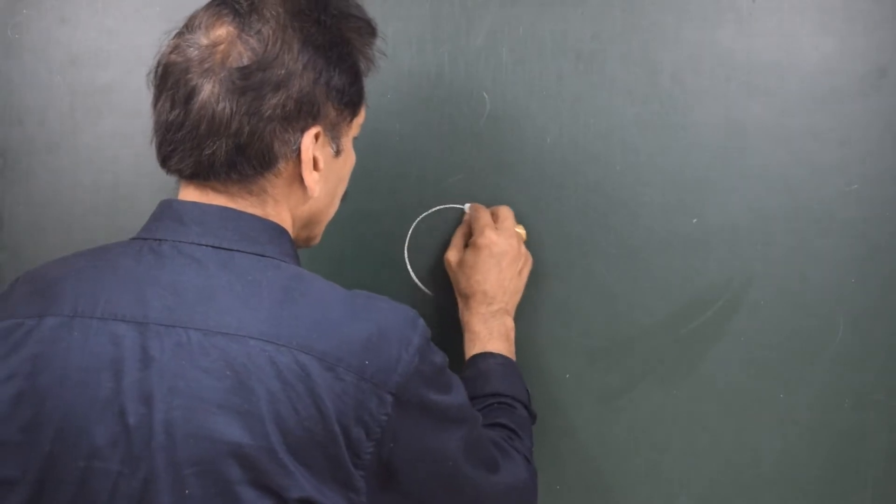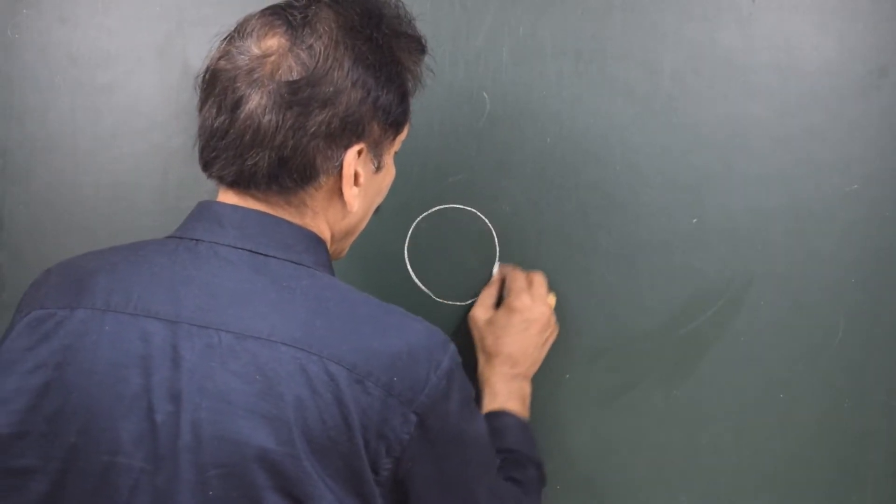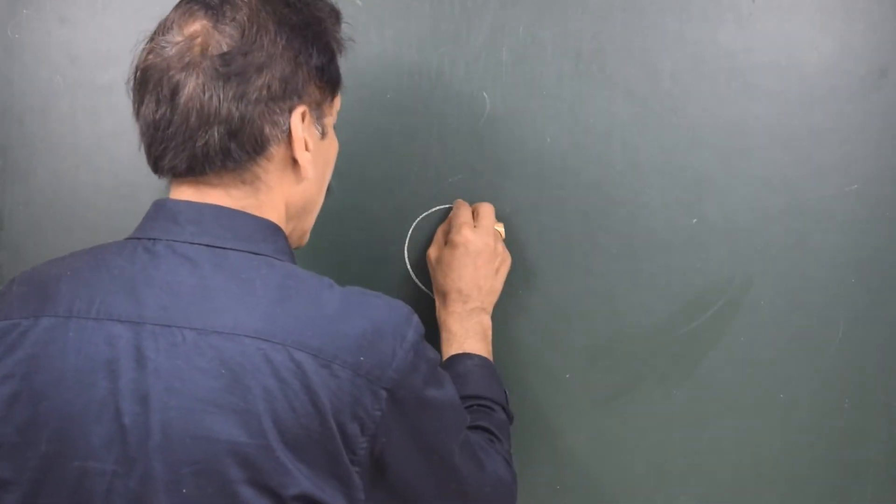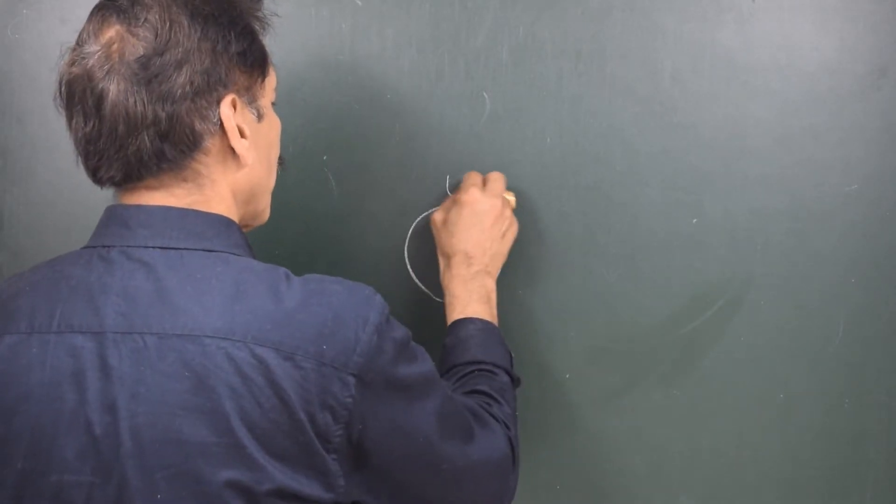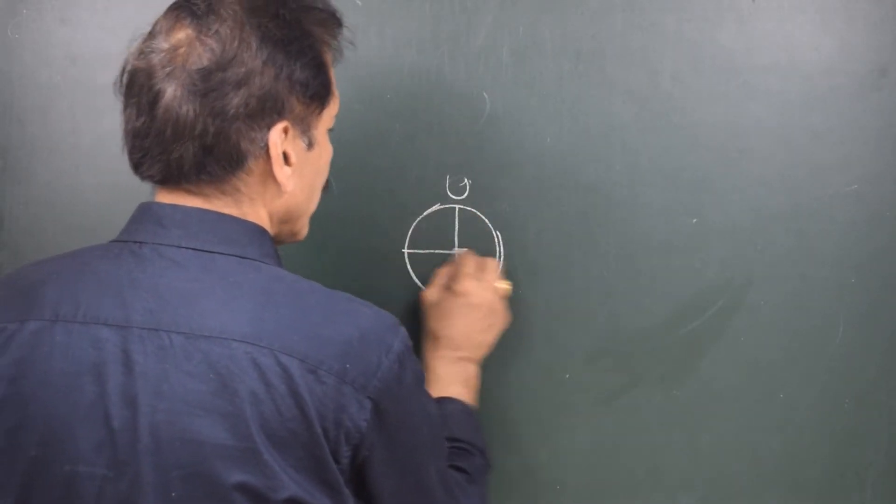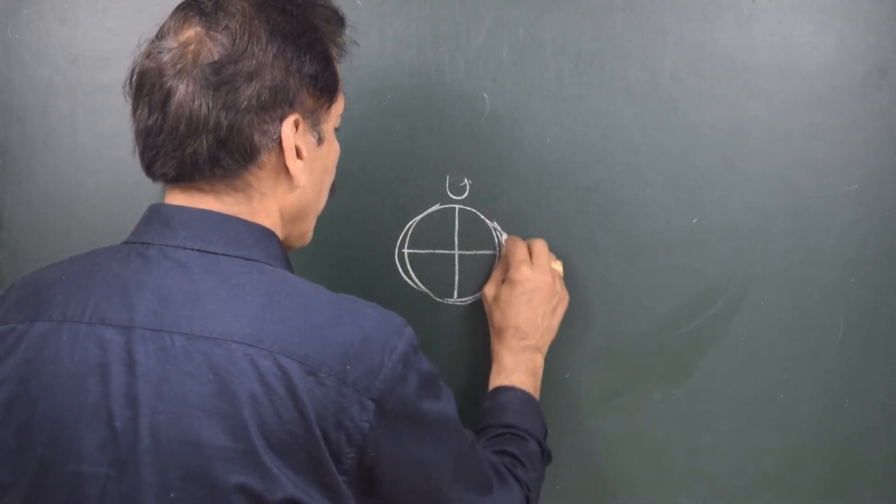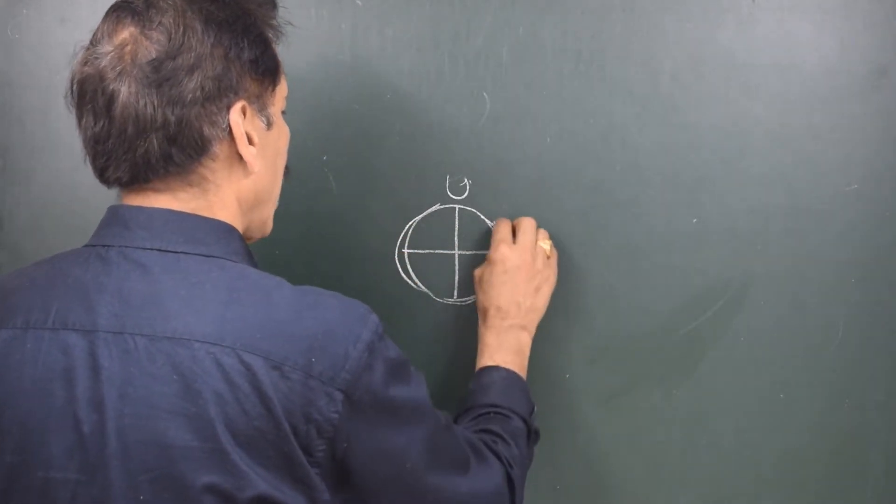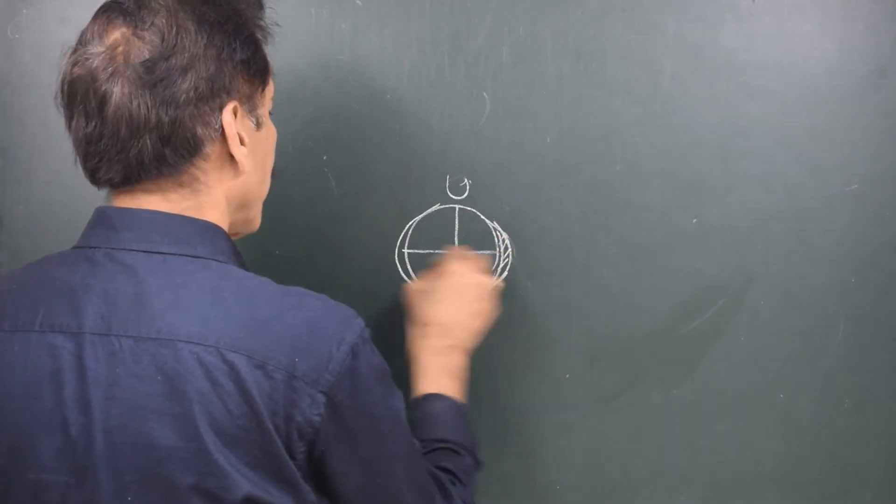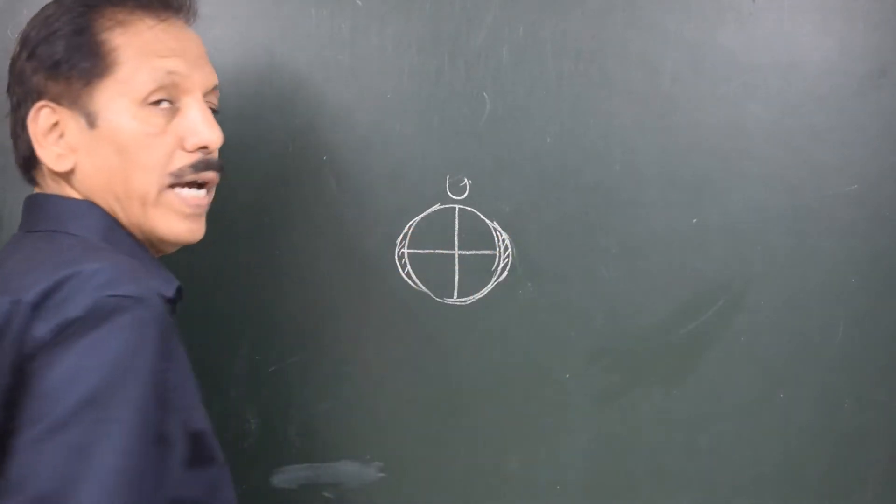This is the Earth. Let us say this is the axis of spin of the Earth. So this is equator. Here is the equatorial bulge. As you know, equatorial diameter is more than the polar diameter. There is this extra mass on the equatorial area.